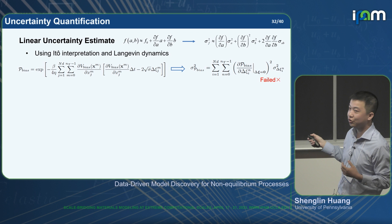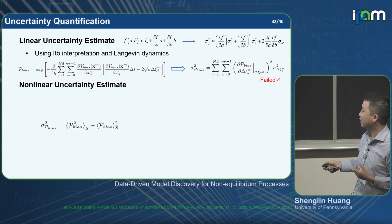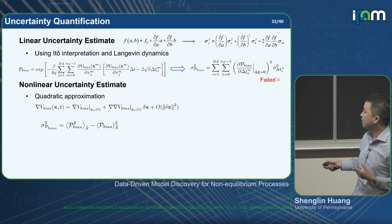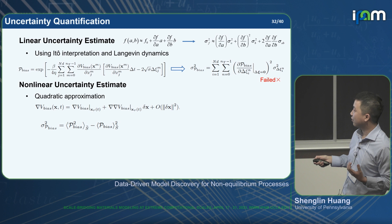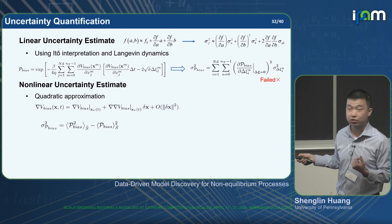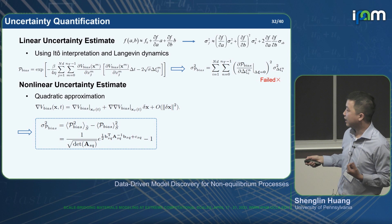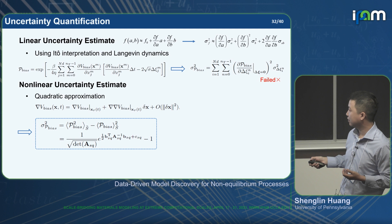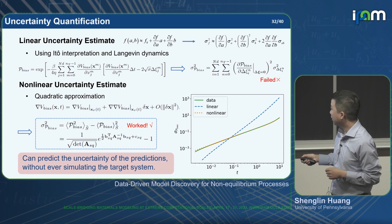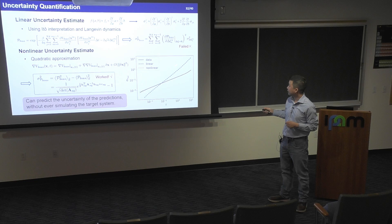We propose a nonlinear uncertainty estimate starting directly from the definition of variance. Since the reweighting factor is related to the potential difference, and for arbitrary potentials this integral is hard to compute analytically, we apply a quadratic approximation to expand the potential. Then we compute the integral as a Gaussian integral to find the analytic solution — though the derivation is still quite tedious. For a simple example, the data (green line) shows that the linear prediction totally fails to capture the uncertainty, but our nonlinear prediction agrees with the uncertainty very well.